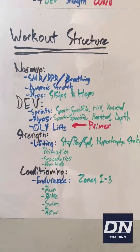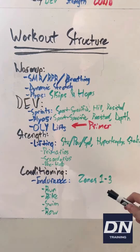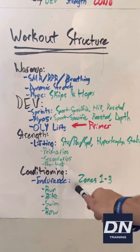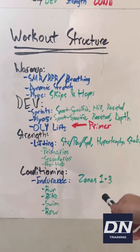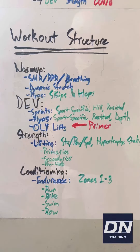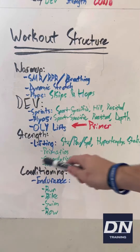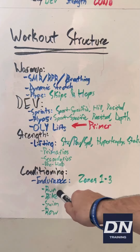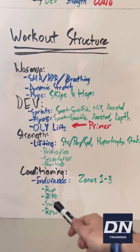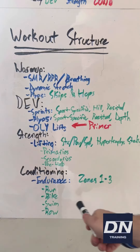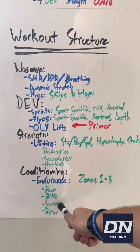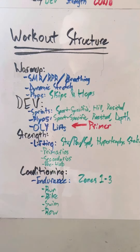And then for conditioning — this is mainly for athletes — this is where we're gonna do all of our endurance training within zone one to zone three. Zone one is low-intensity, whereas zone three is high-intensity and very anaerobic. We do all of that in our conditioning session. The default is running, but if you're looking for a lower impact form of cardio, you can bike, swim, or row.